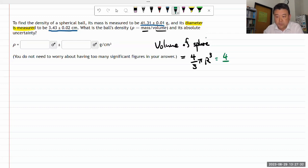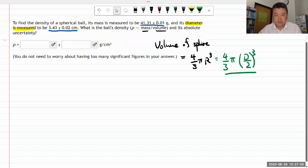In terms of diameter, it's going to be 4/3 π (d/2)³. Plugging in numbers should be fairly easy.